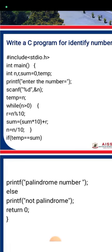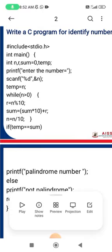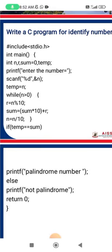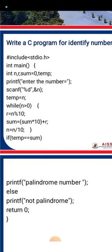After the initialization phase, we use a printf to print 'enter the number.' Then we scan that particular number using scanf with the %d format specifier, because we are using the integer data type, and n is the variable where the user enters the value. The next step is temp equals n, meaning the temporary variable stores the value of n entered by the user.